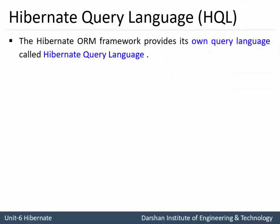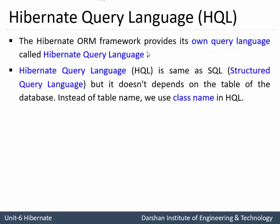The Hibernate ORM framework provides its own query language which is known as HQL. This HQL is same as SQL, that is Structured Query Language, but it doesn't depend on the table of the database. Instead of the table name, it depends on the class name in HQL.